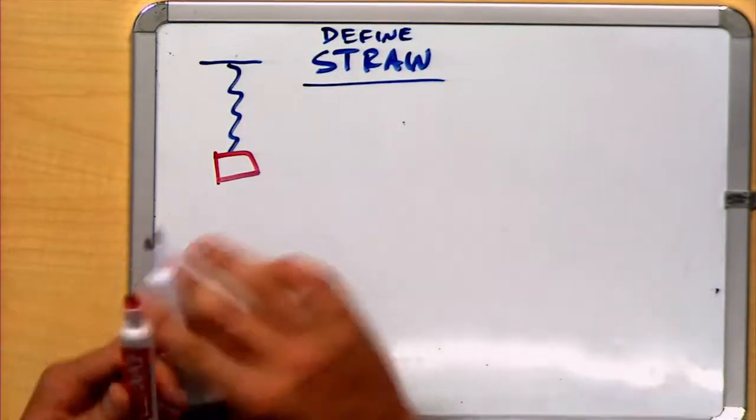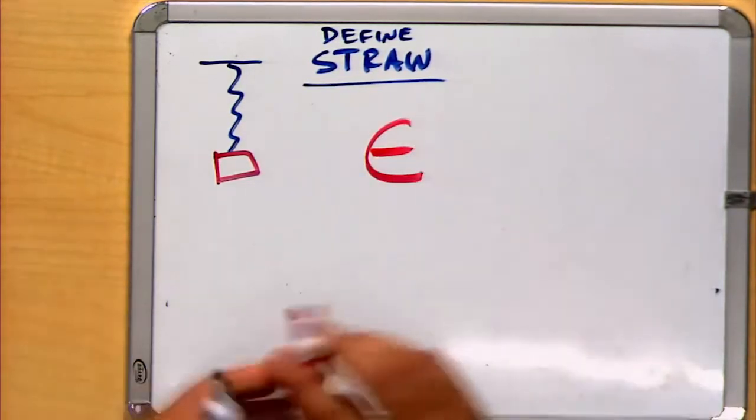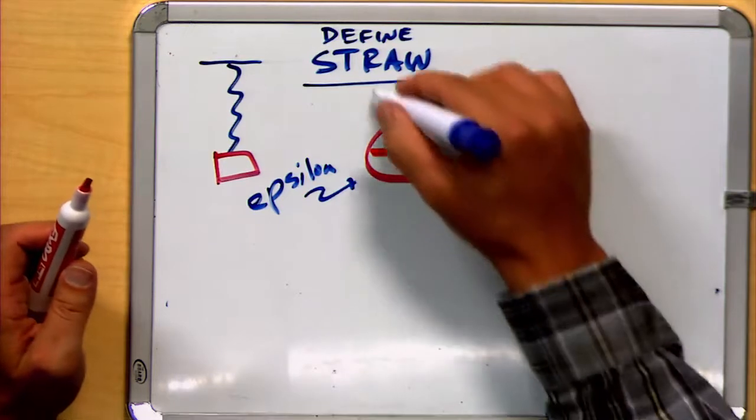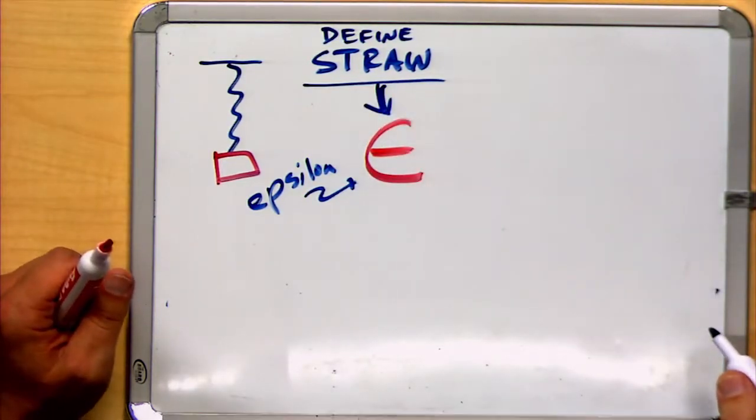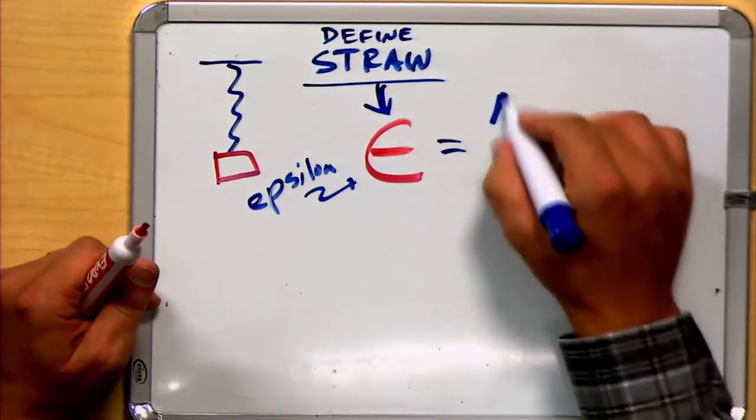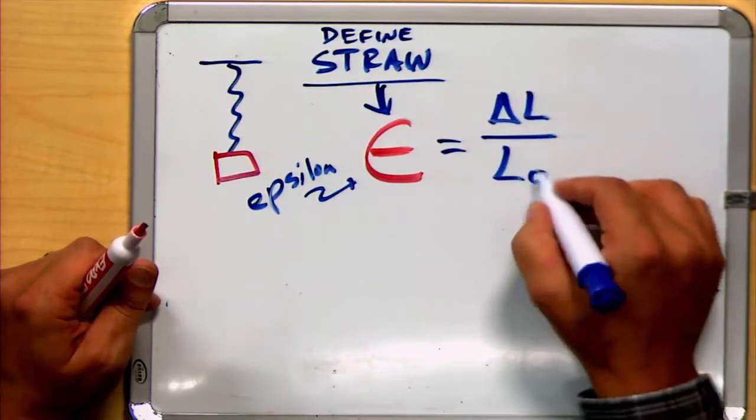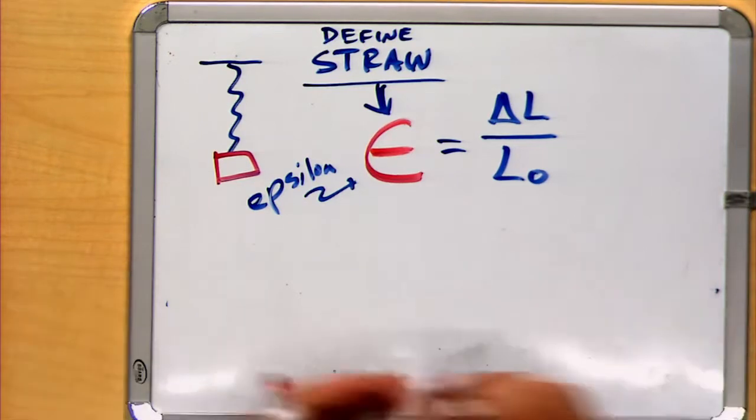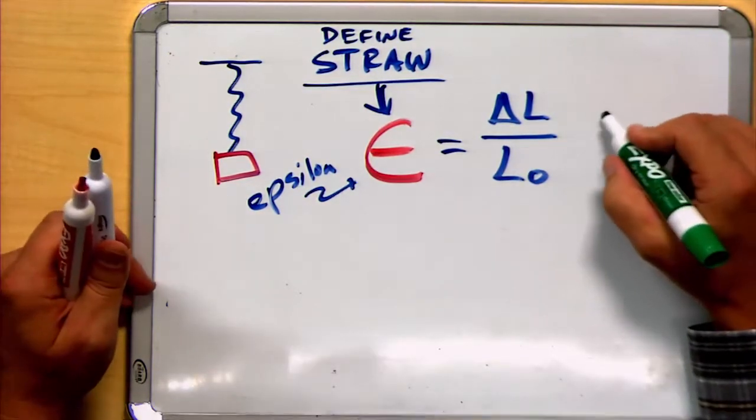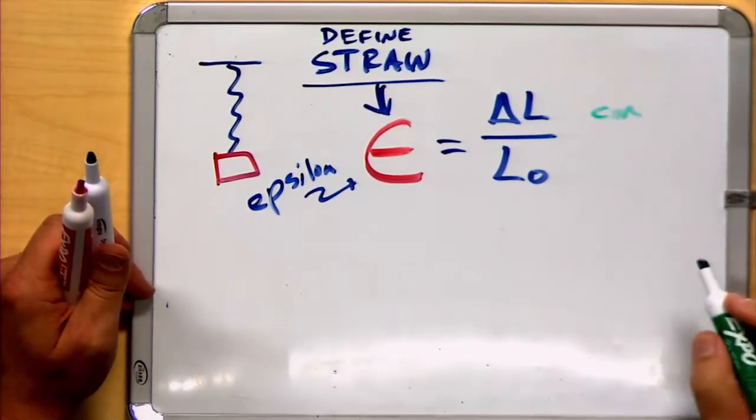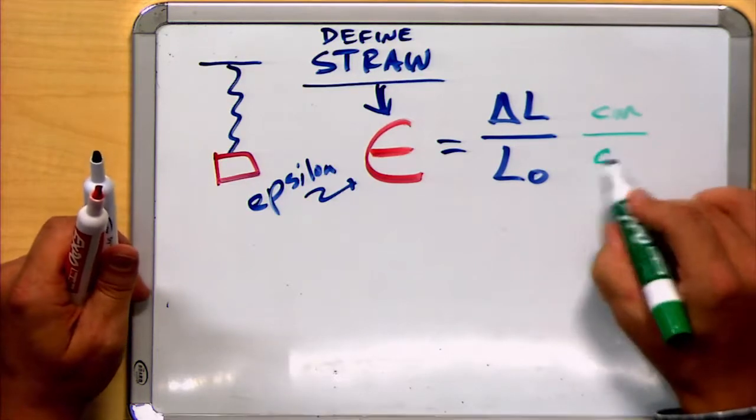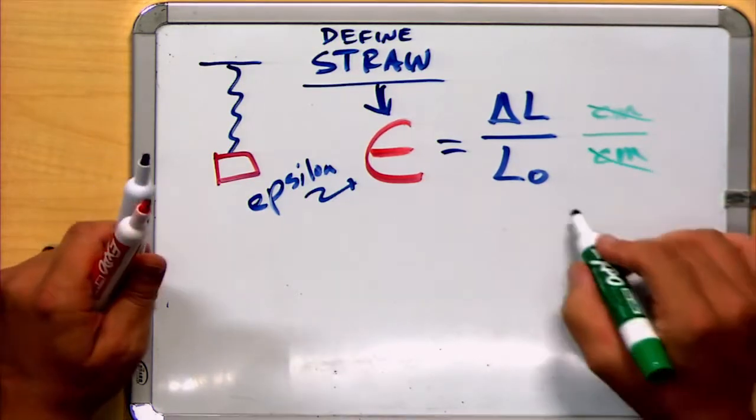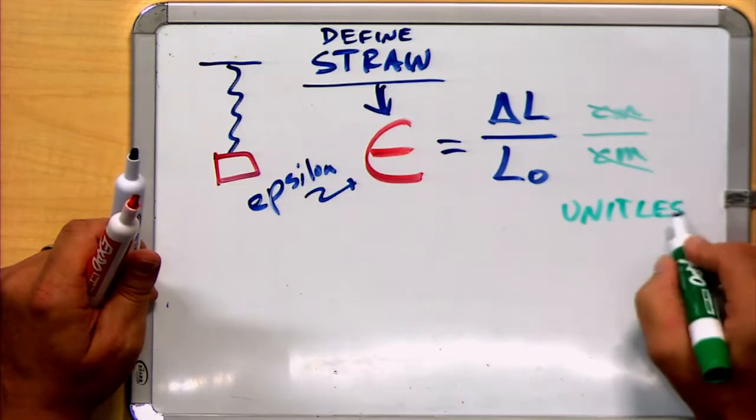We represent strain with a Greek letter. The Greek letter is the small letter epsilon. And that's a representative for strain. And we define it as being the change in the length divided by that initial length. This is how we define strain. Notice a change in length is going to have some units of length, for example, centimeters. And the initial length will also have units of length, for example, centimeters. And those units will cancel out. So this ends up being what we call a unitless value.